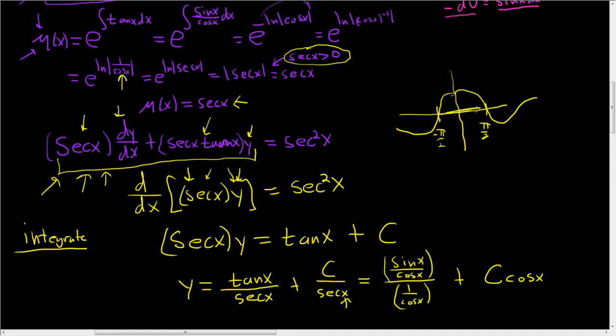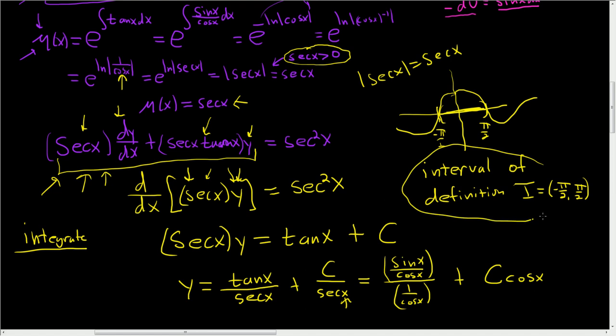So anywhere here, not including π/2 or negative π/2, the absolute value of secant x is simply secant x. So our interval of definition, if you had to find that, in this case, this would be negative π/2 to π/2. I hope this video made sense.